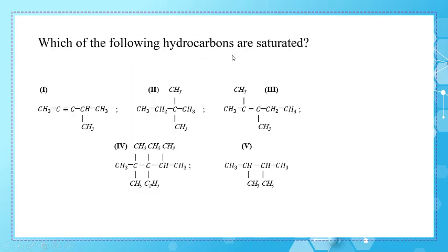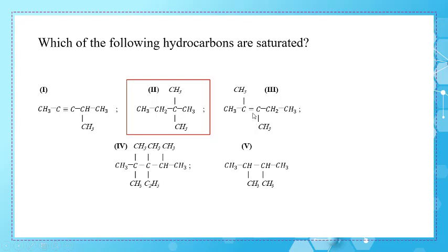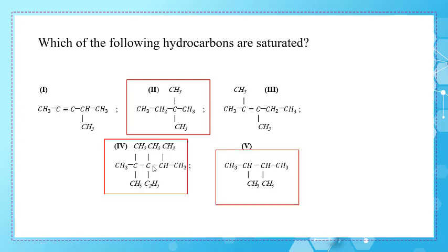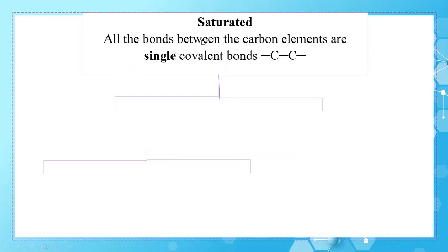Which of the following hydrocarbons are unsaturated? We have to look at the bonds between the carbon atoms. The first has a triple covalent bond, so it's unsaturated. The second has all single covalent bonds between carbon atoms, so it's saturated. The third is unsaturated since it has a double covalent bond. The fourth and fifth compounds are saturated hydrocarbons since all bonds between carbons are single covalent bonds.